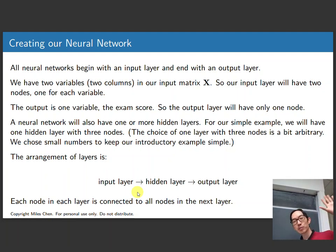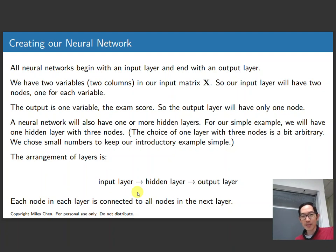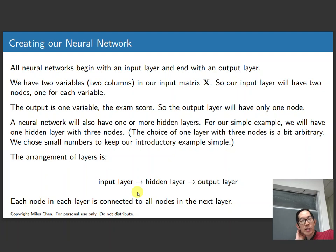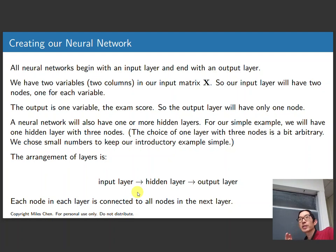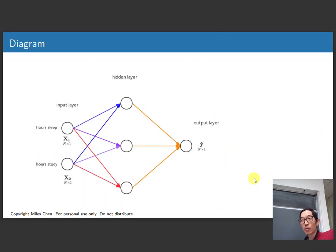All neural networks start with some kind of input layer and end with an output layer. Our input matrix X has two columns, each column representing a variable. The output has one variable — the exam score — so the output layer has just one node. A neural network also has one or more hidden layers. For our example, we'll have a hidden layer with three nodes — just an arbitrary choice. You could have two, three, four, 100, or 1,000 nodes in that hidden layer. Here I just have one hidden layer, so we go from input layer to hidden layer to output layer. You could have more than one hidden layer.